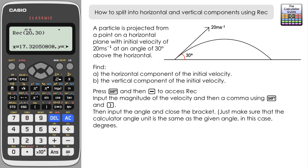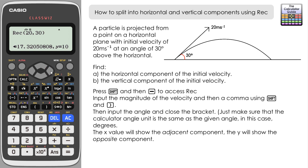Press equals and you can see values for x and y. As set up in the diagram, x represents the horizontal component and y represents the vertical component. This is because the angle is given from the horizontal — the x value is always adjacent to the angle. In this case it's the horizontal component, so that's 17.32 and so on. The vertical component, if we scroll right, is exactly 10.